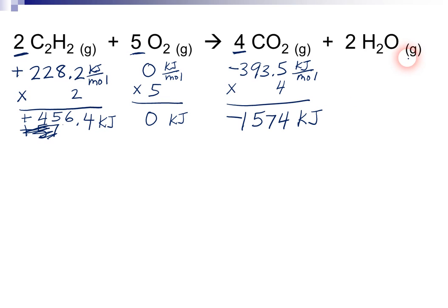Now, water, be very careful here, because there are two values for water. In the last problem, we used the liquid value. This time, we're specifically asked for the gas value. So, water in its gaseous form has a heat of formation of negative 241.8 kilojoules per mole. And we have two moles of that, so we have to multiply it by two. And so, that gives us a total of negative 483.6 kilojoules.